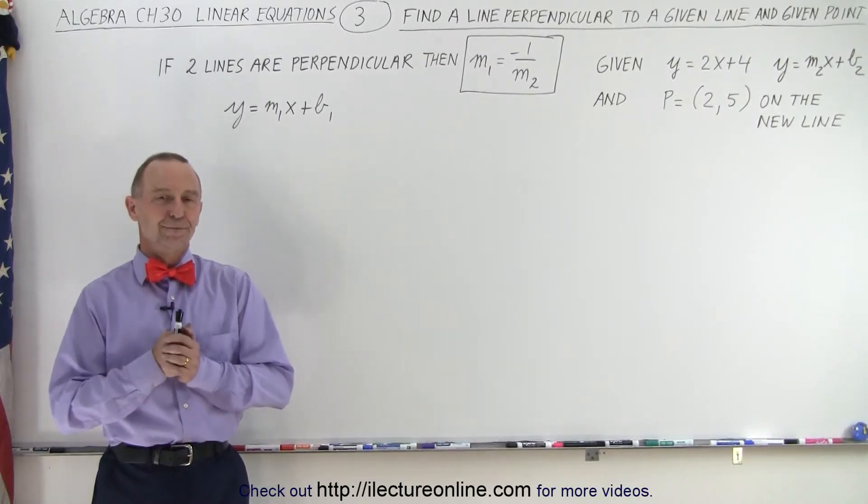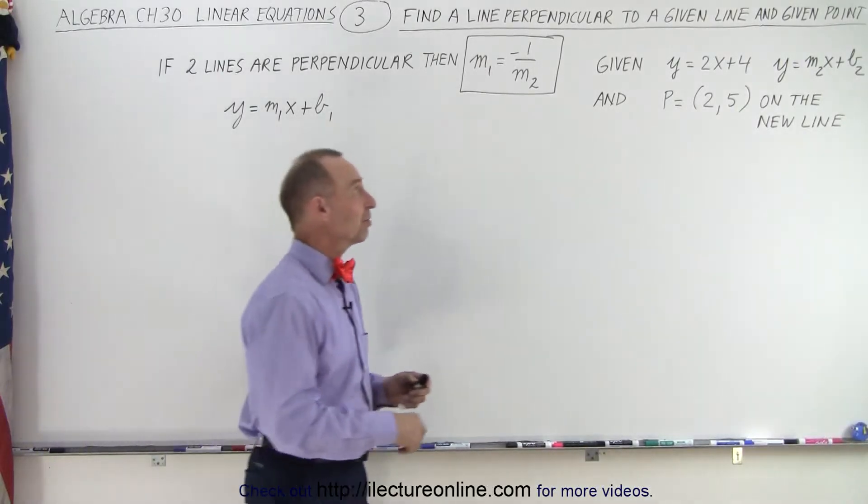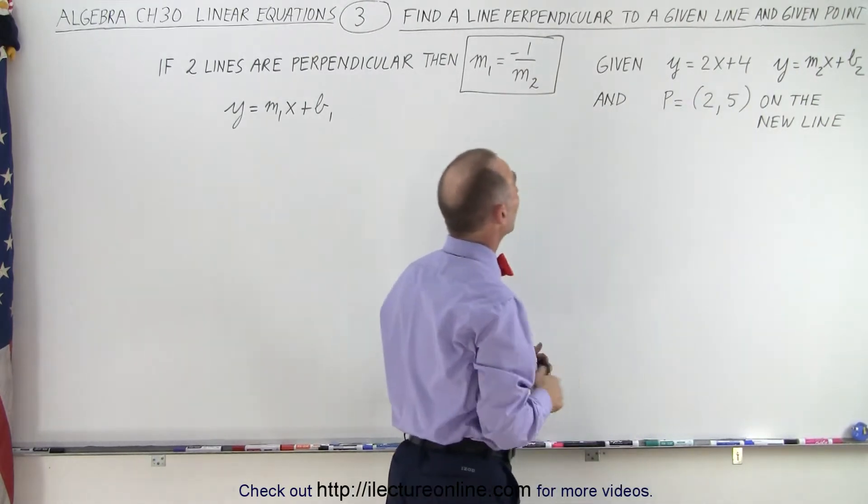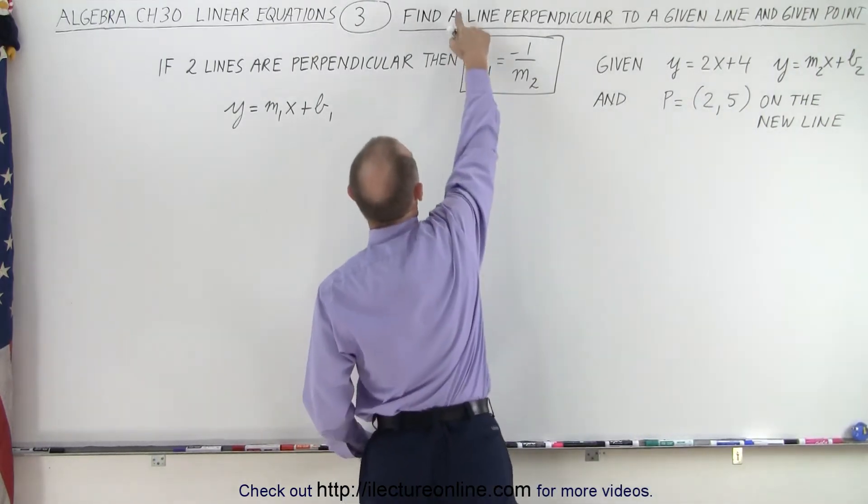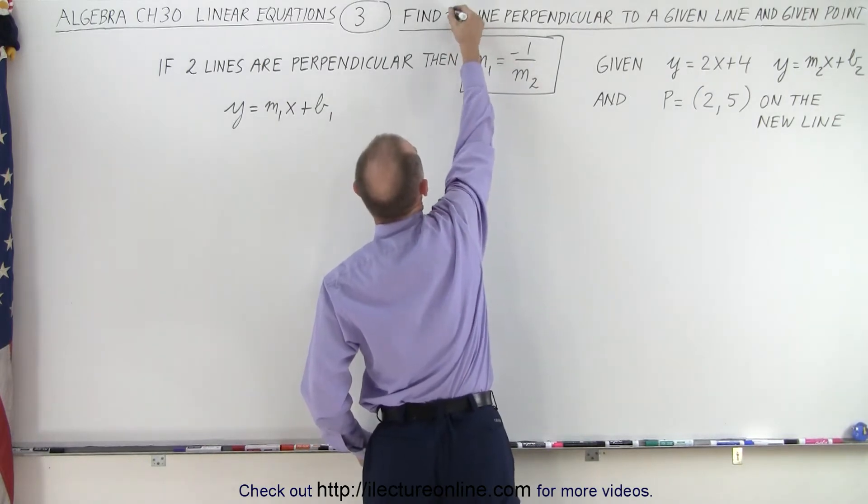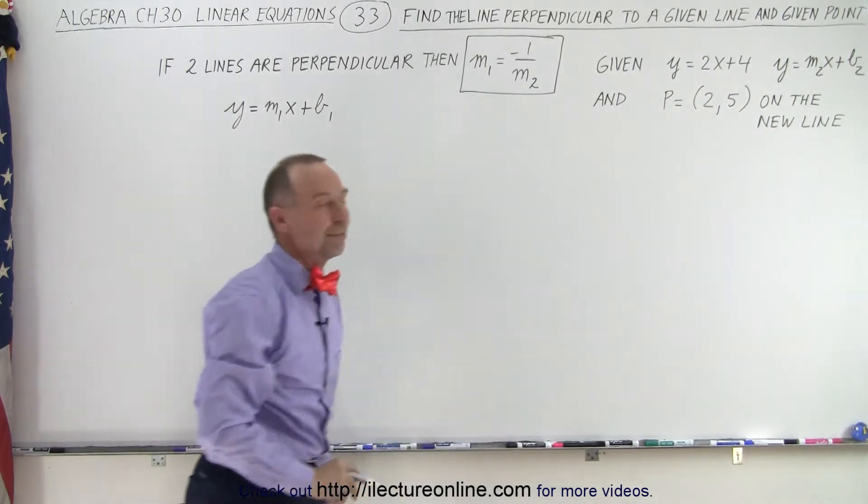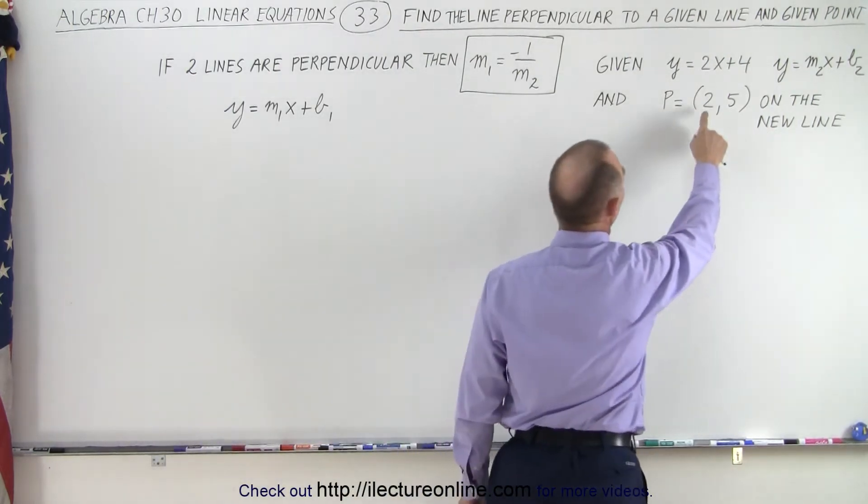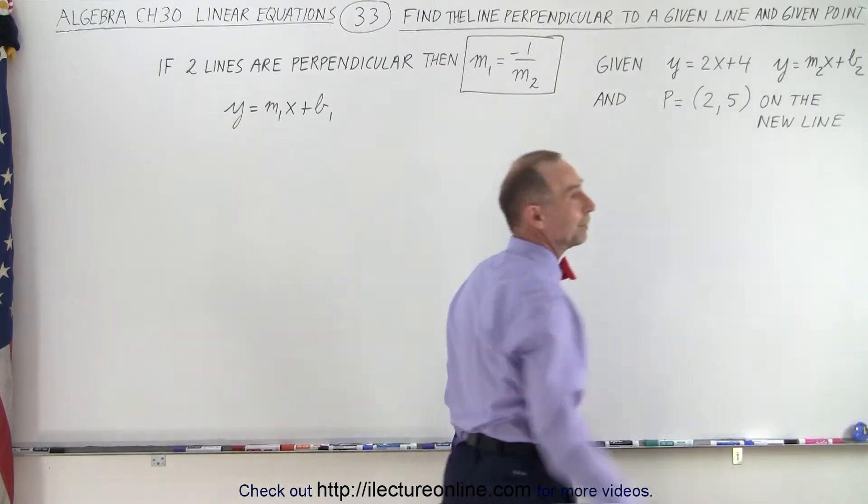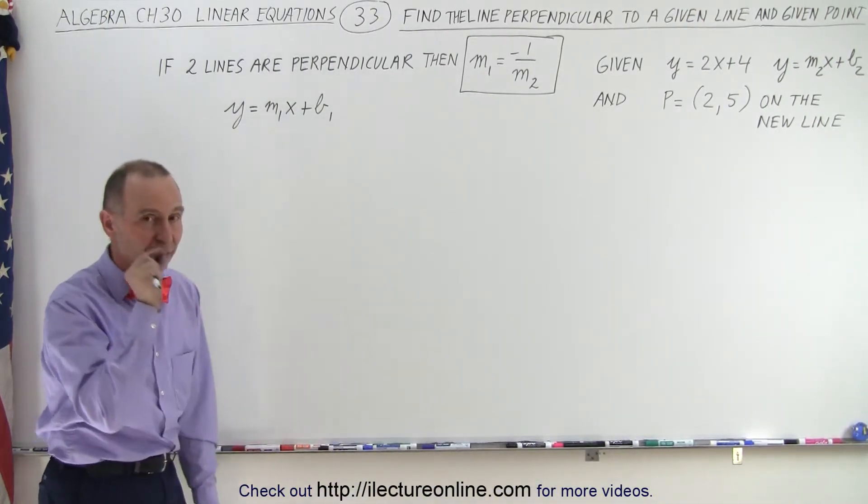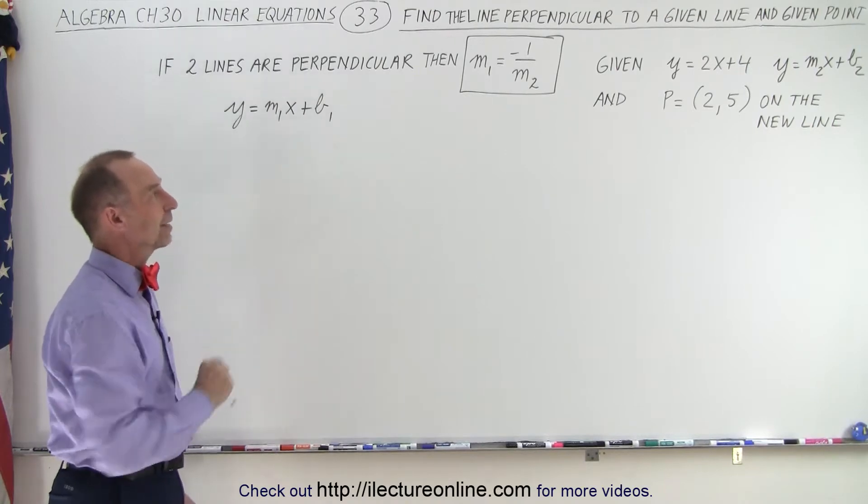Welcome to our lecture online. Let's say we're given the same equation as in the previous video where y equals 2x plus 4, and now we're not looking for a line but for the line. This is video number 33. We're looking for the line that contains the point (2,5) and which is perpendicular to the given line. So now there will be only a specific line that will meet that criteria.